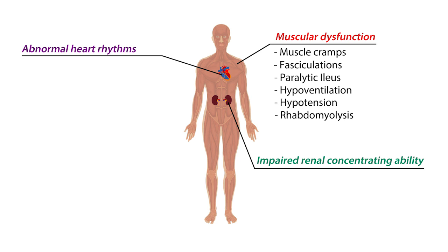Other symptoms include impaired renal concentrating ability, which will present as polyuria or increased urine output, and polydipsia or increased thirst and water intake. This is mostly due to impaired renal concentrating ability.